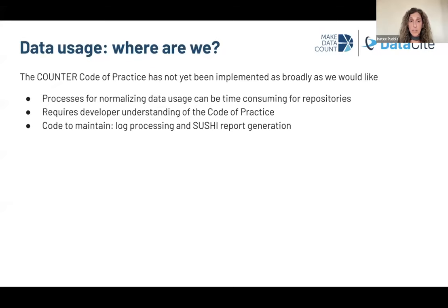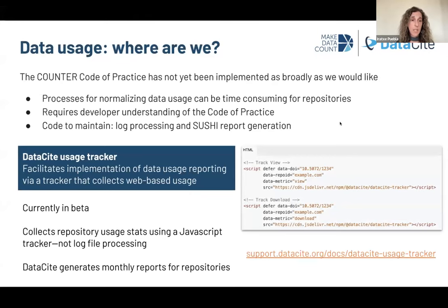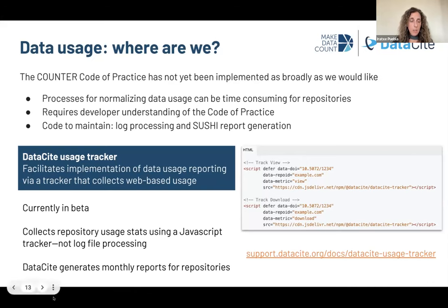We know that adoption of the COUNTER code of practice has not been as broad as we would like. There are challenges around implementation because the processes can be quite time-consuming for repositories, and implementation requires developer understanding of the code of practice as well as a certain level of code to maintain for log processing and SUSHI reports. One of our current areas of work is to address these challenges. In response, DataCite is working on a usage tracker to facilitate consistent collection of data usage information from repositories. The usage tracker collects web-based usage and doesn't require log file processing.